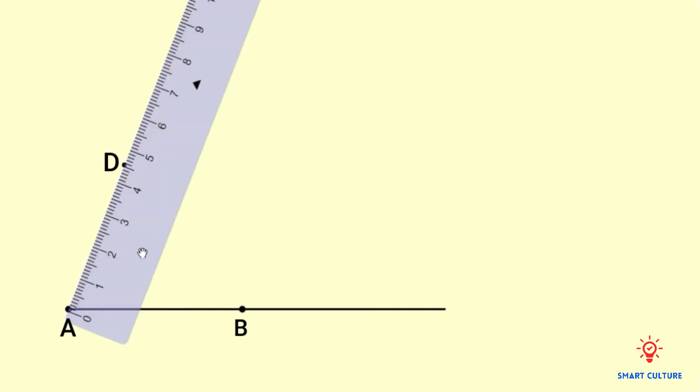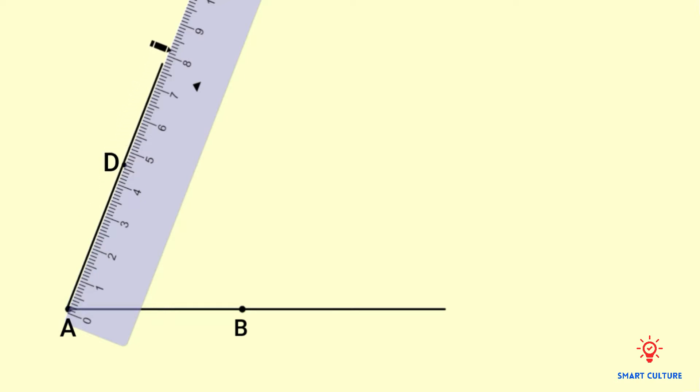From line segment AB, mark a point D. This point D will be on the line that will be parallel to AB. Now draw a line from A through D.